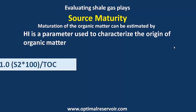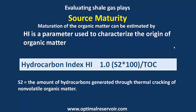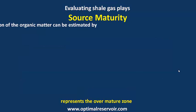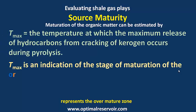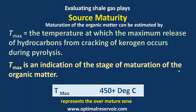The Hydrocarbon Index is a parameter used to characterize the origin of organic matter, calculated using the equation where S2 is the amount of hydrocarbons generated through thermal cracking of non-volatile organic matter, and TOC is total organic content. Tmax is the temperature at which the maximum release of hydrocarbons from cracking of kerogen occurs during pyrolysis; over 450 degrees is recommended, representing the over-mature zone.